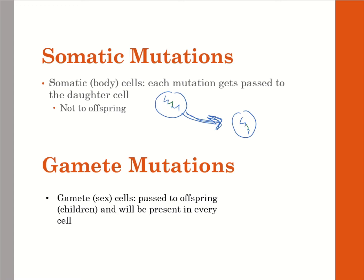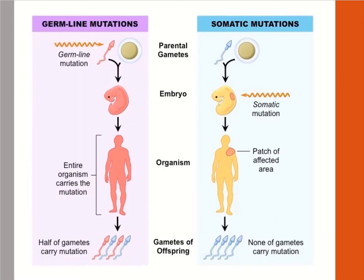There are also gamete mutations. Gamete cells are the sex cells, and those mutations are passed to offspring — like children — and will be present in every single cell. Looking at germline mutations, here is a mutation in the sperm. When the sperm fertilizes the egg and the embryo develops, the whole individual carries that mutation and can pass it to their offspring.